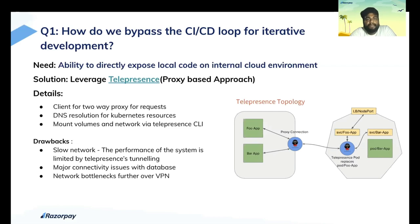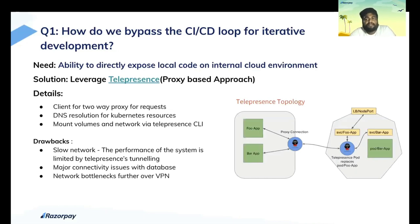The first question is: how do we bypass the CI/CD loop for iterative development? The need is to directly expose local code onto the cloud environment. As a V1, we went ahead with Telepresence, which followed a proxy-based approach — a client sitting on both the local system and the remote cluster, making connections through a tunnel. It took care of DNS resolution, volume mounting, and networking. But there was a major drawback due to the tunneling approach: responses were slow, and there were connectivity issues with the database and sometimes with the cluster itself, plus bottlenecks when combined with VPN.